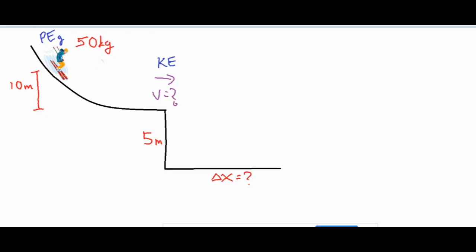Because of the conservation of energy, we're going to assume that gravitational potential energy is completely transformed into kinetic energy from the top to the bottom of the hill. This means the formula mgh equals one half mv squared.